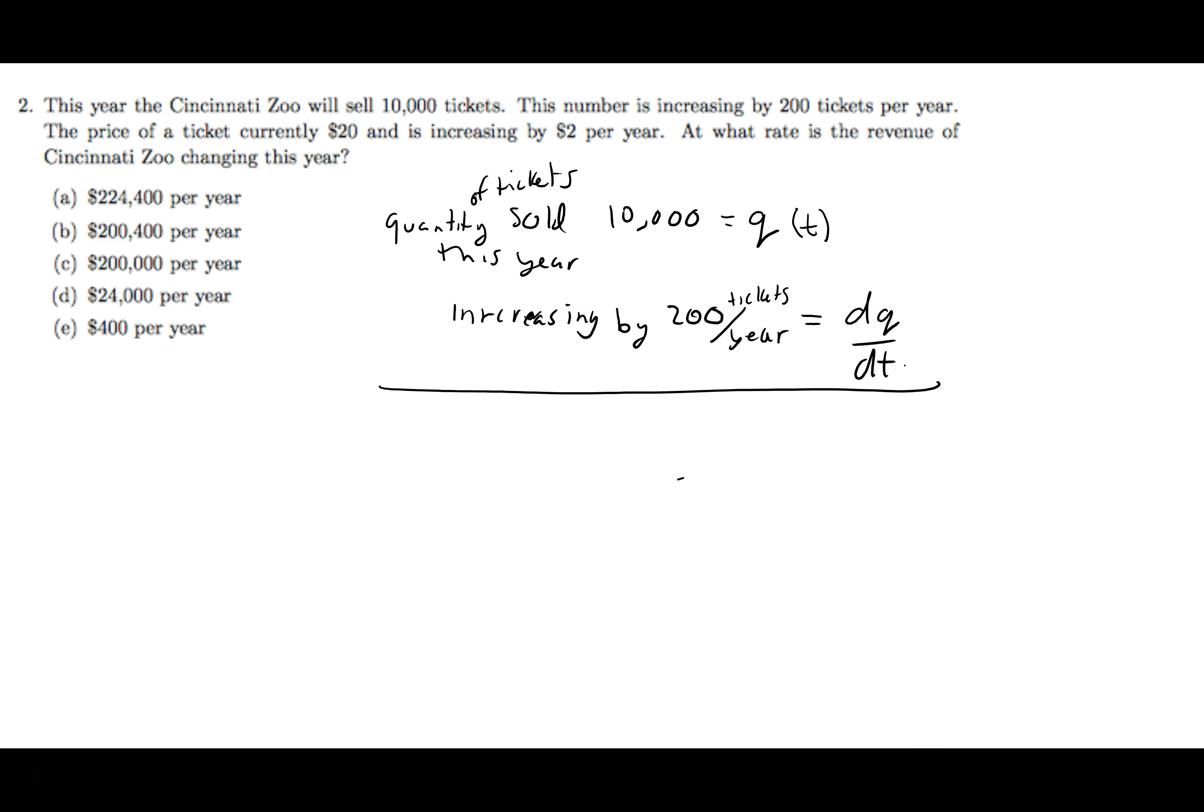Next we move to the price of a ticket. The price of the ticket is currently $20. Price is a function of time as well. And it is increasing $20 by $2 per year. That's a rate. That's going to be dP/dt.